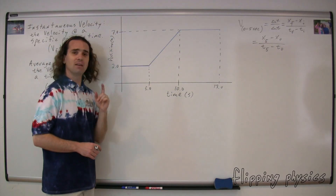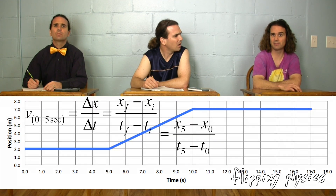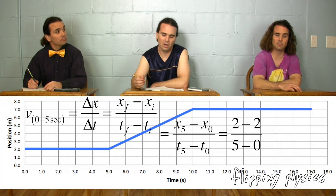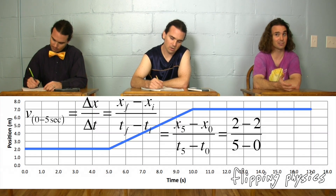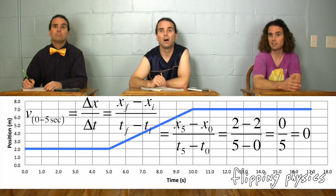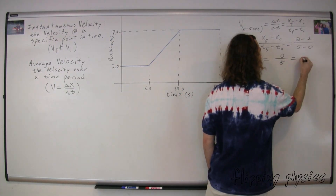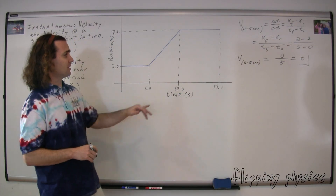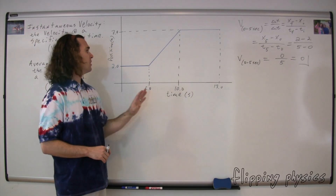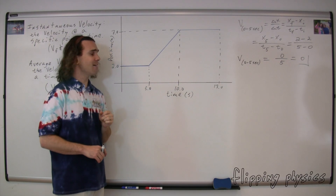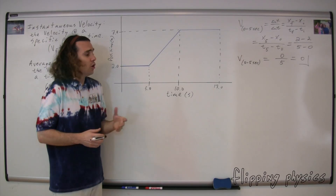Could you please look at the graph and fill in the numbers? According to the graph, the position at five seconds is two meters, and the position at zero seconds is also two meters. The time at five seconds is five seconds, and the time at zero seconds is zero seconds. So we get zero over five, which is just zero. The average velocity from zero to five seconds is zero. This is how you would solve it mathematically, but you should be able to look at the graph and know that. Who can tell me how?